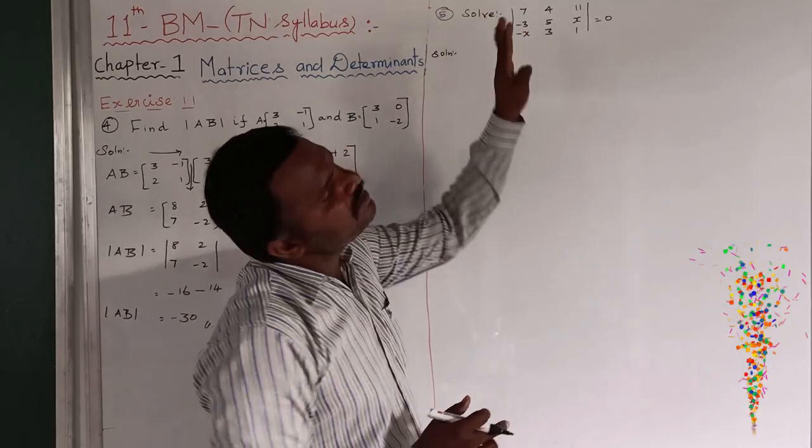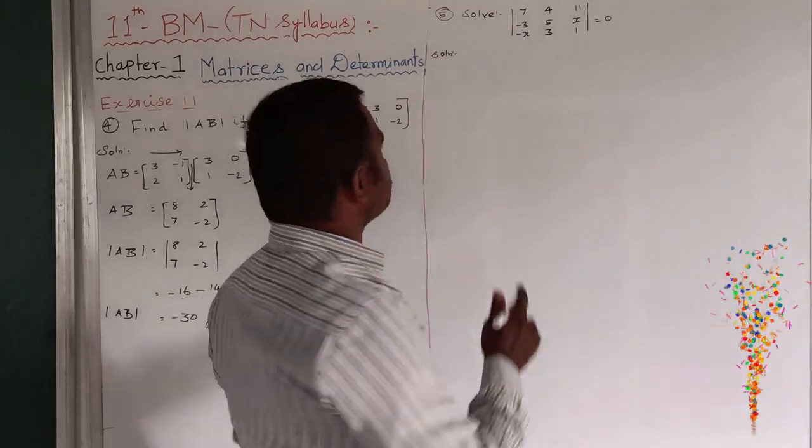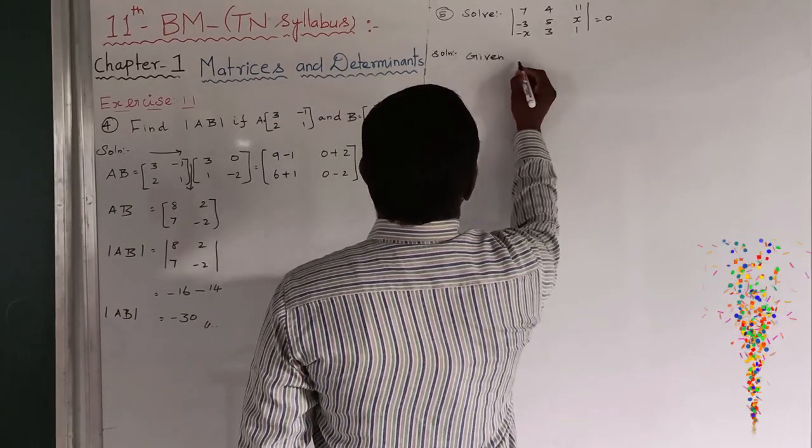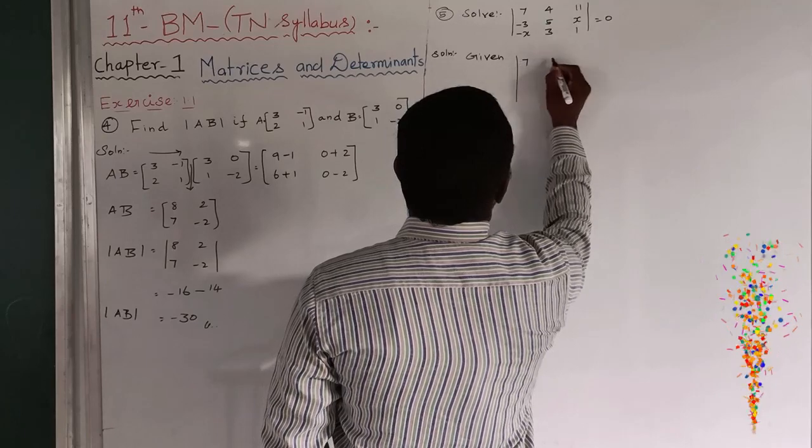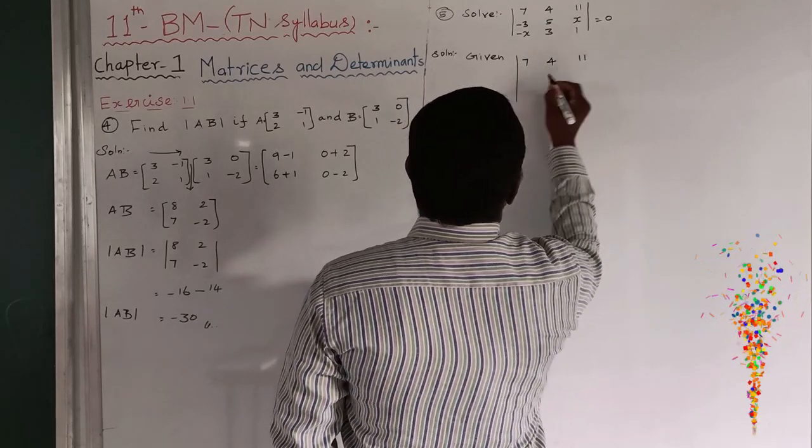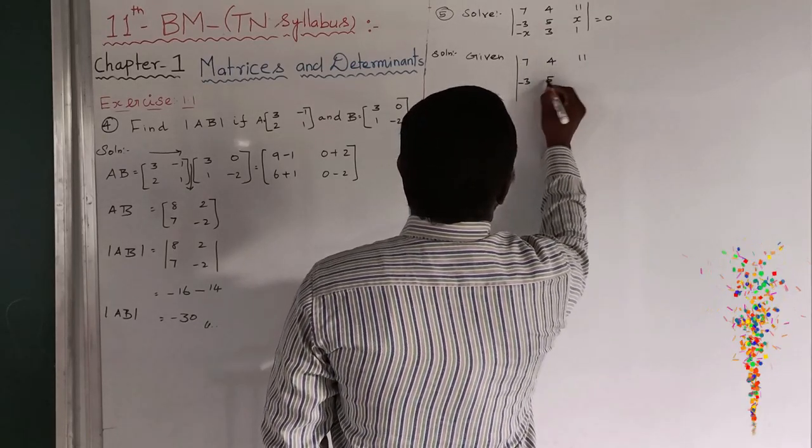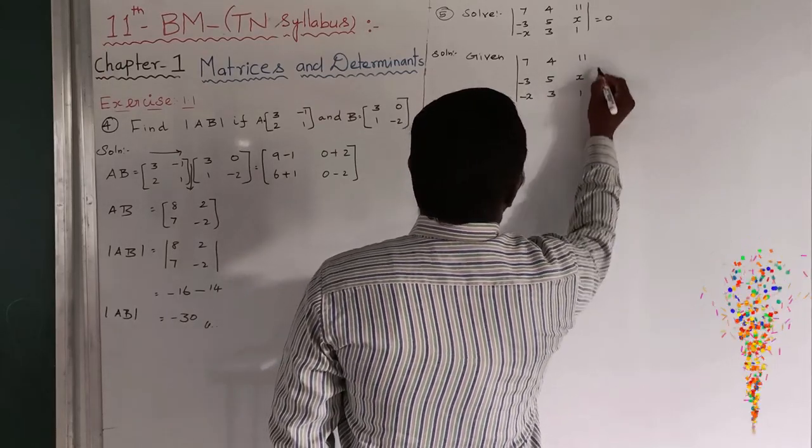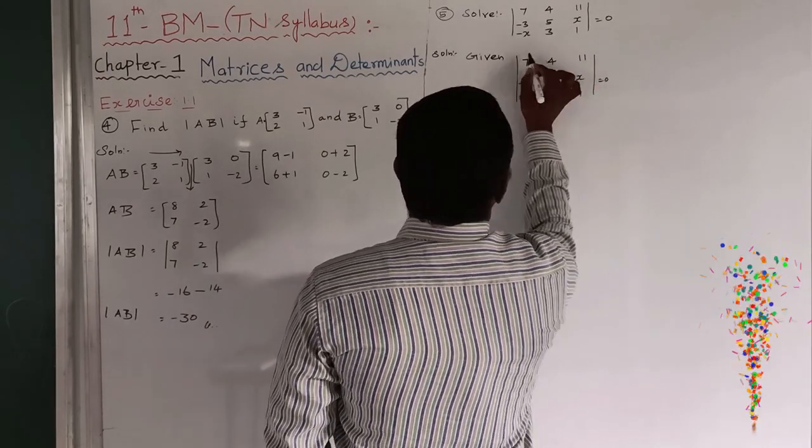We reduce to a single term. Then, you have to find out the value of X. So, by the given 3 by 3 matrix. 7, 4, 11. Minus 3, 5, X. Minus X, 3, 1. This is equal to 0.